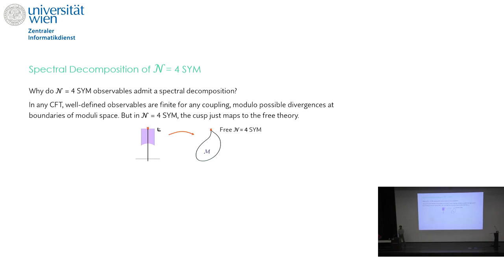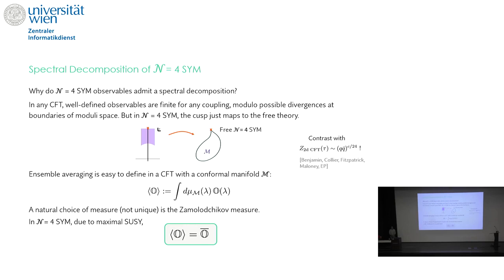Why do N=4 observables admit a spectral decomposition? In any CFT, well-defined observables are finite for any coupling, modulo possible divergences at boundaries of moduli space. Here there's one boundary — the cusp — but that's just where the free theory lives, so these observables are square-integrable. This contrasts with 2D CFT partition functions, which diverge exponentially at the cusp and require careful handling. Ensemble averaging is easy to define in any CFT with a conformal manifold — it's just the literal average over continuous couplings with respect to some measure.